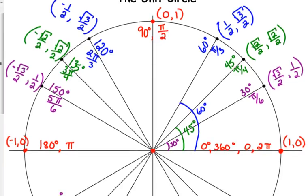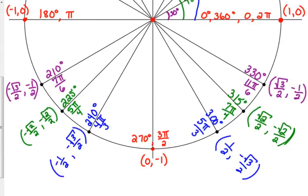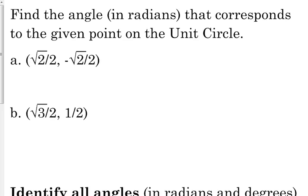Well, positive x, negative y means we're in the fourth quadrant. So, in radians, that would be 7 pi over 4.